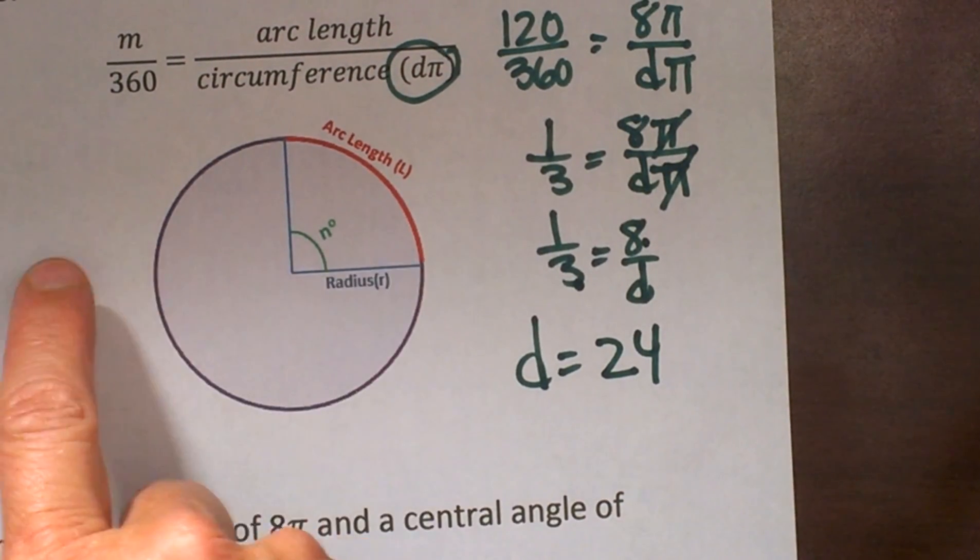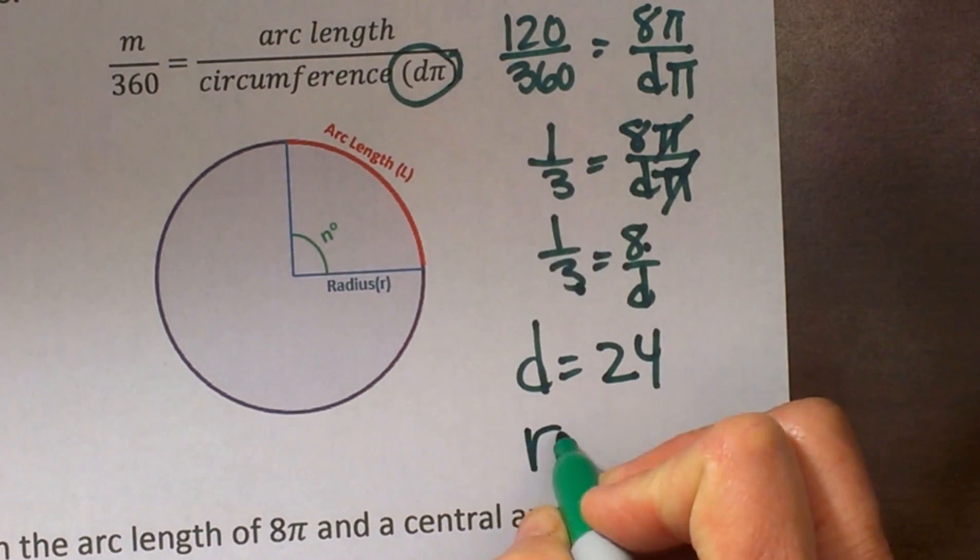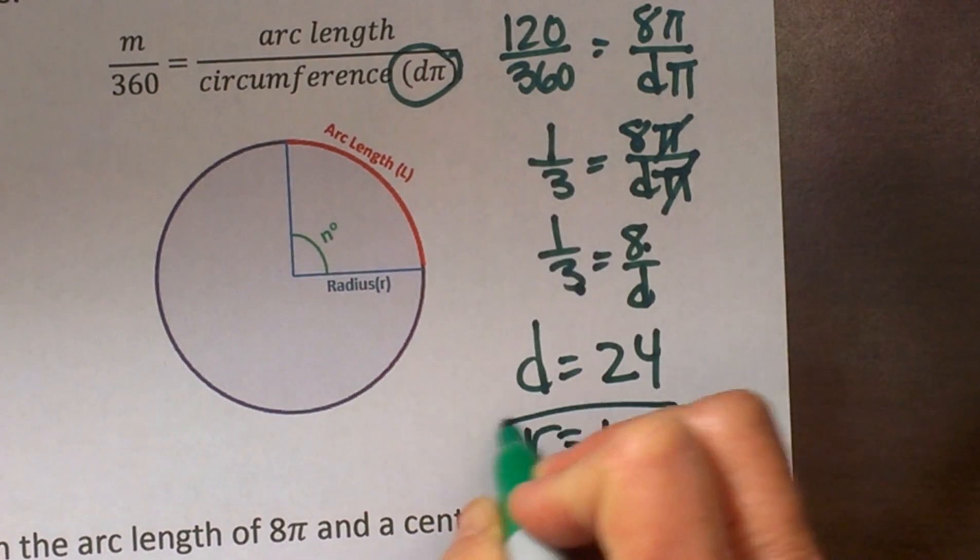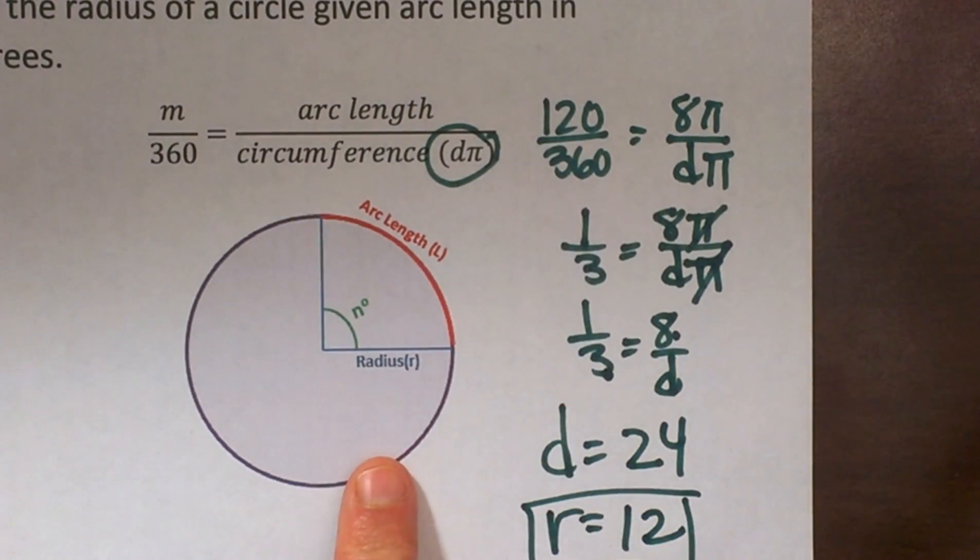So that is telling us our diameter is 24. Well diameter is all the way across the circle. So what is our radius? It is half. So the radius would then be 12.